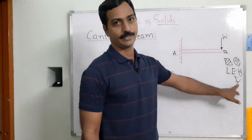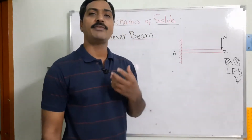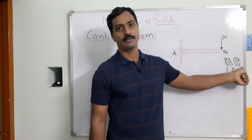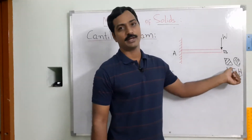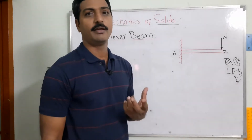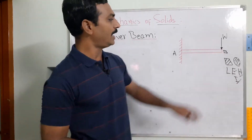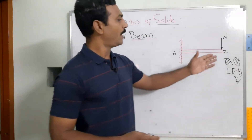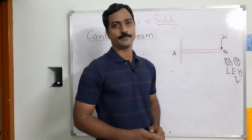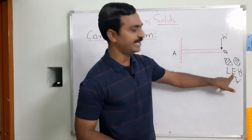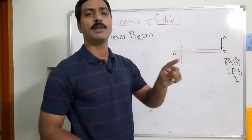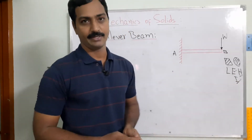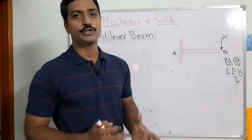If the material is wood, circular or rectangular cross sections are generally used. For metal/steel materials, the choice of cross section depends on the application. The C cross section is widely used in automobiles because it has a high damping factor compared to other sections.